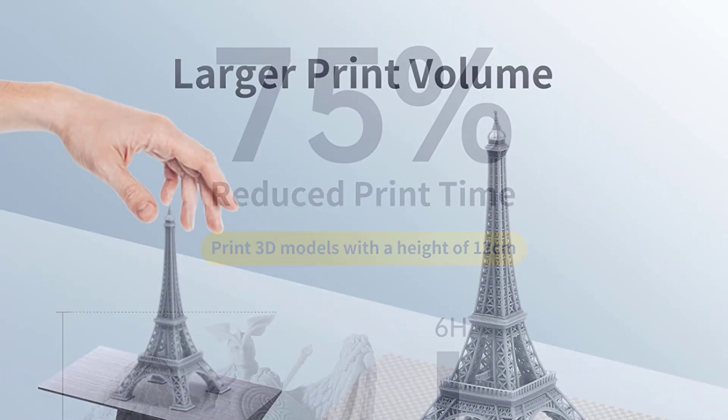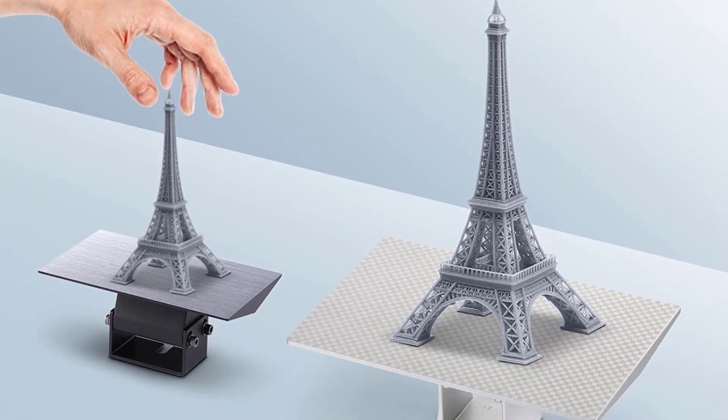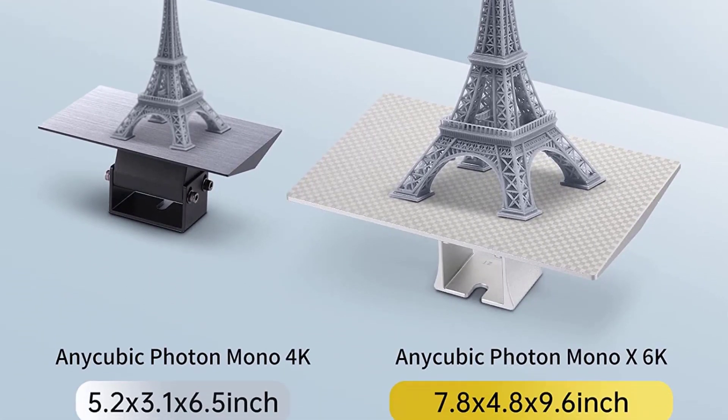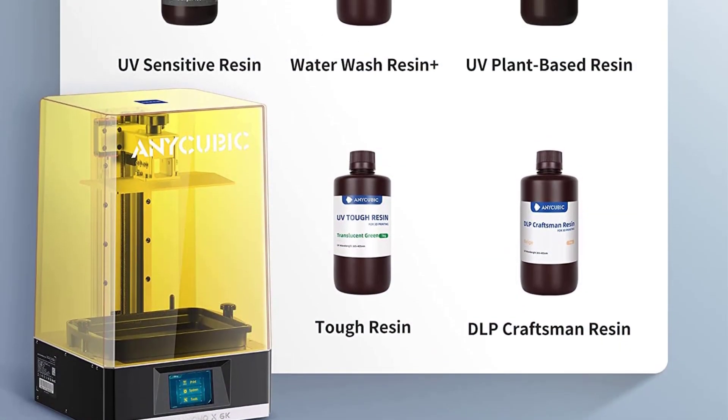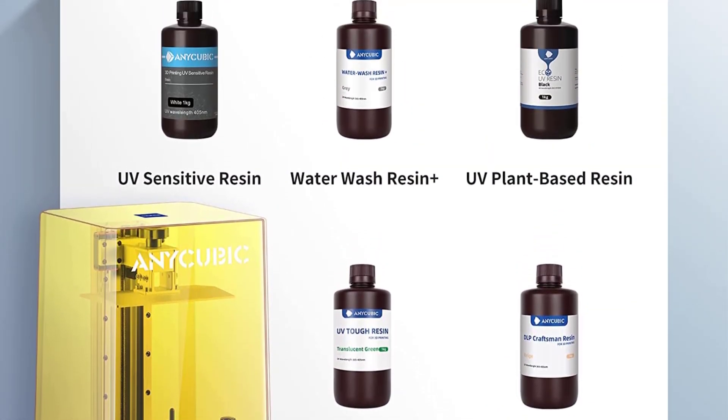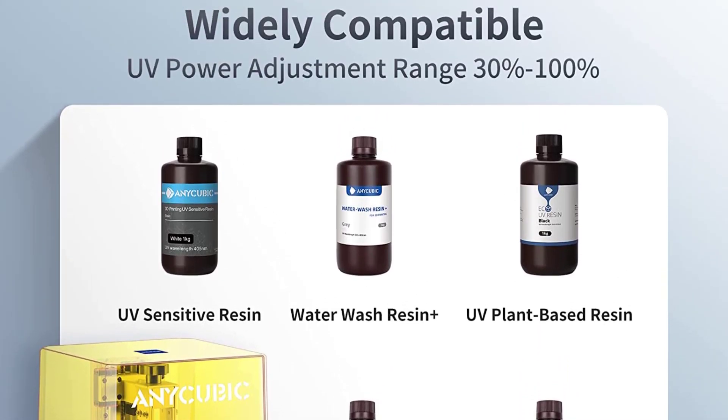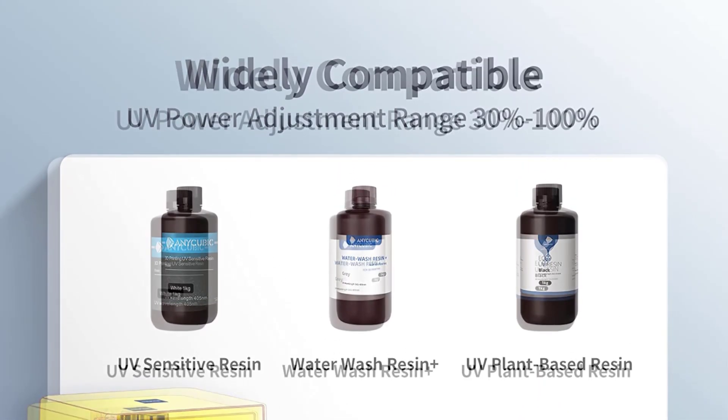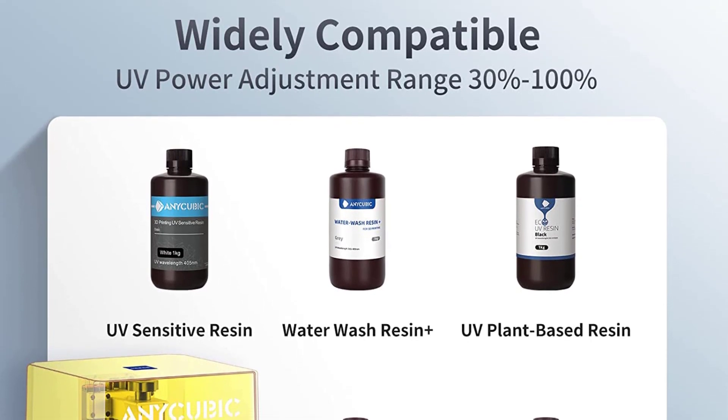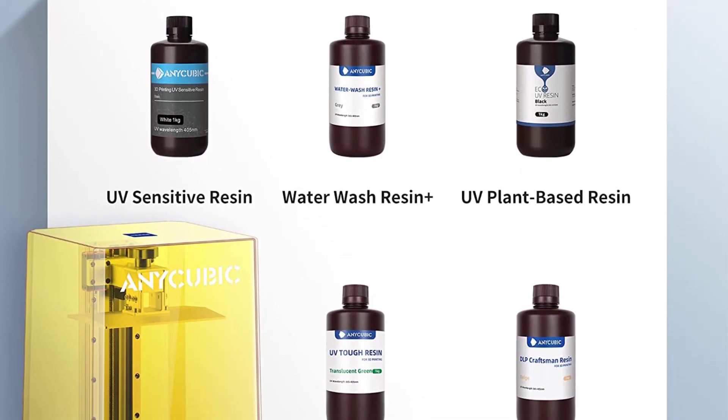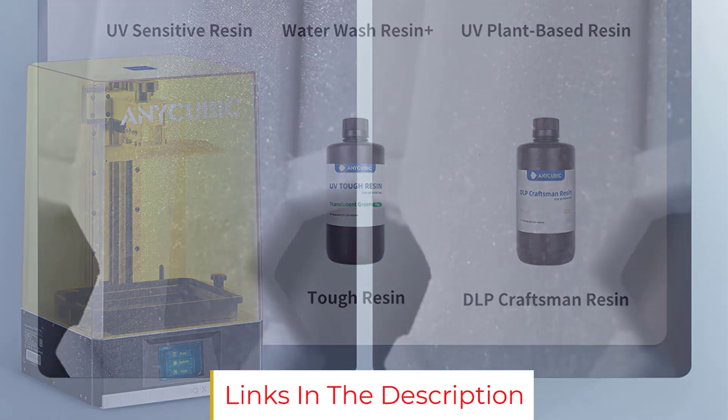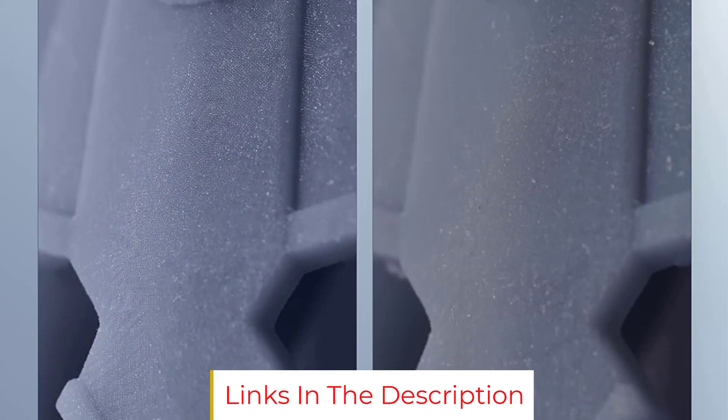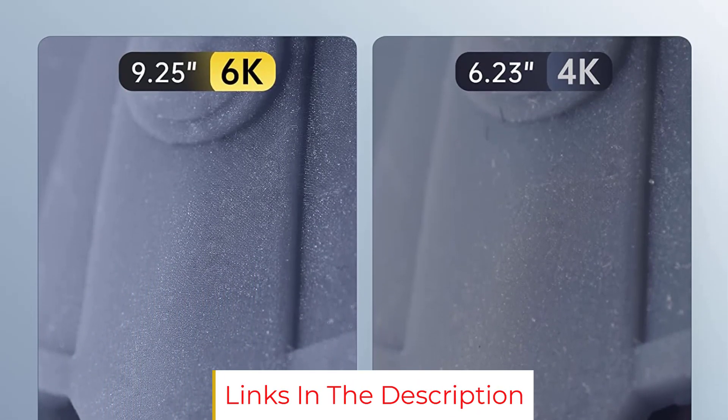The Mono X 6K comes with a 5760x3600 pixel monochrome LCD screen with a 3000:1 contrast ratio. You get a 34 micron XY resolution, and the high contrast delivers prints with sharp and well-defined corners and edges. The LCD has a high transmittance rate of 6%, resulting in faster curing times than other resin 3D printers and an increased printing speed of up to 80mm per hour.